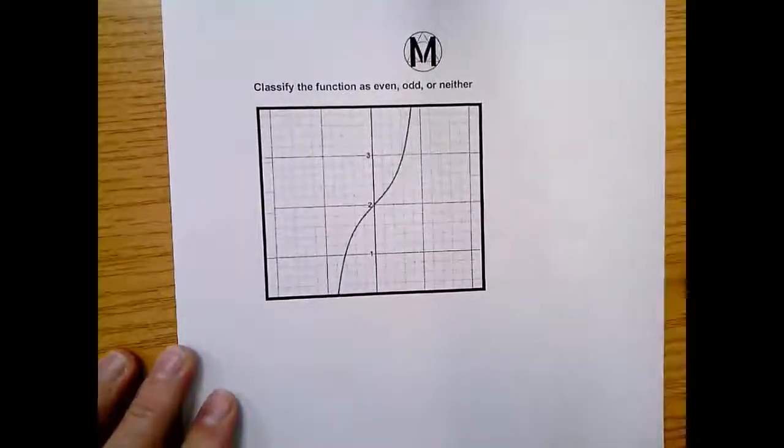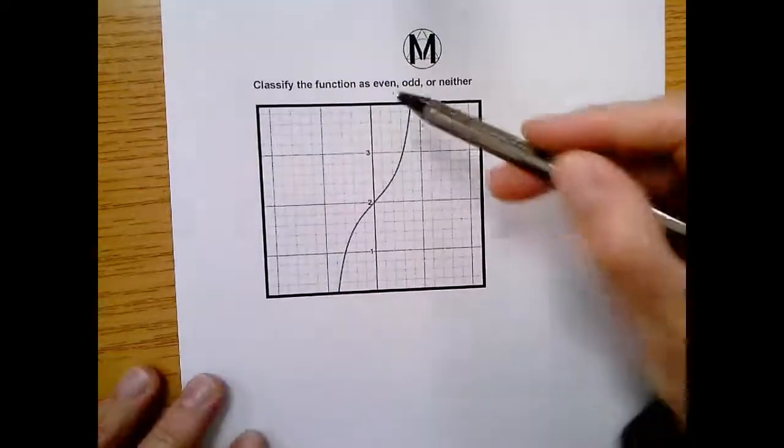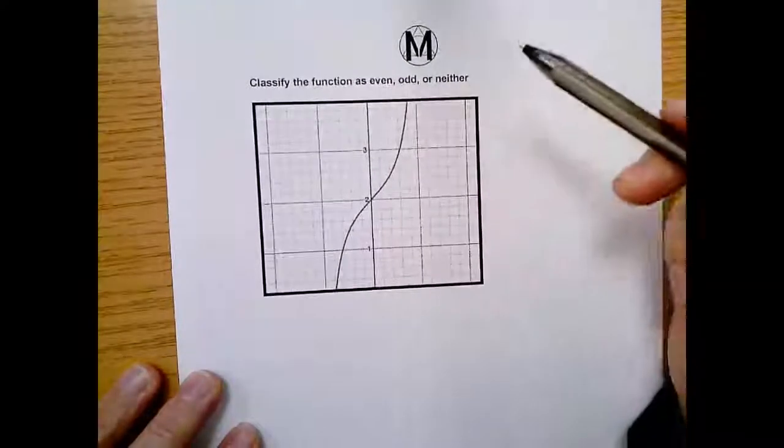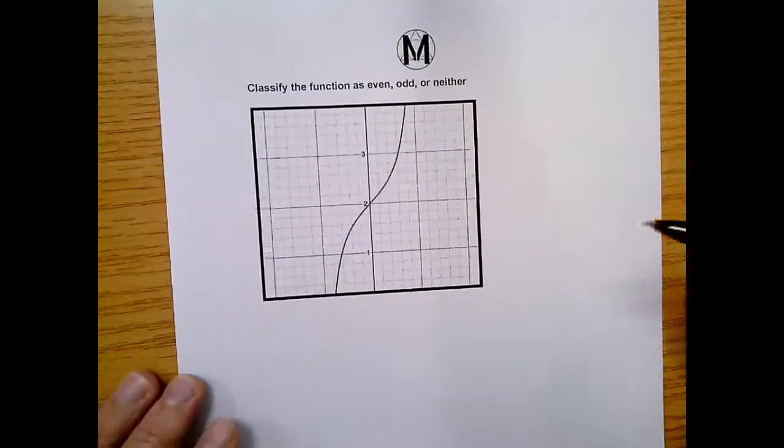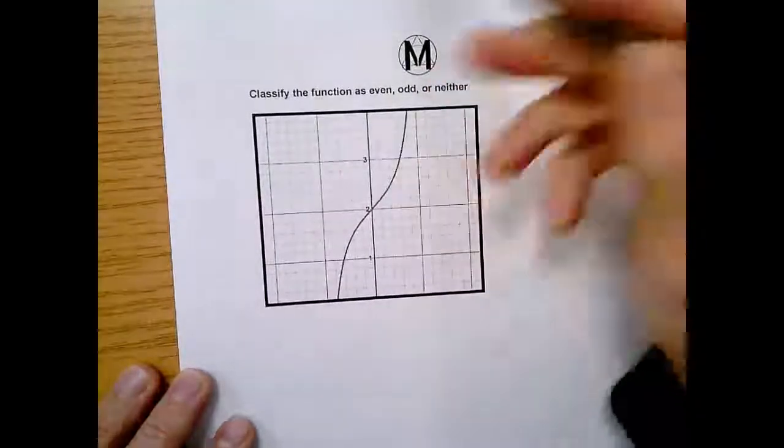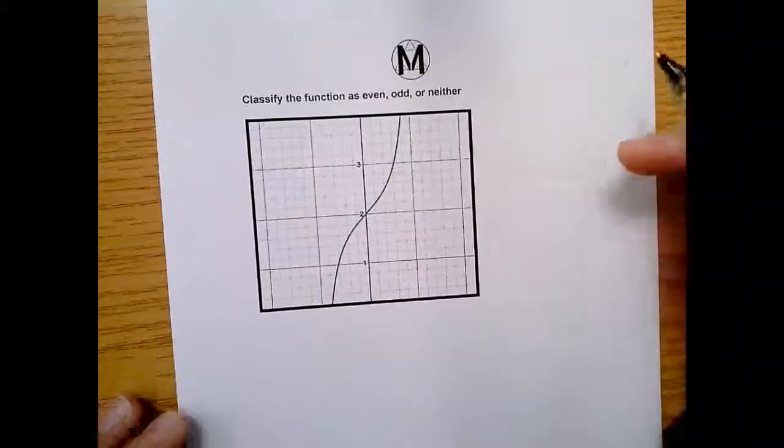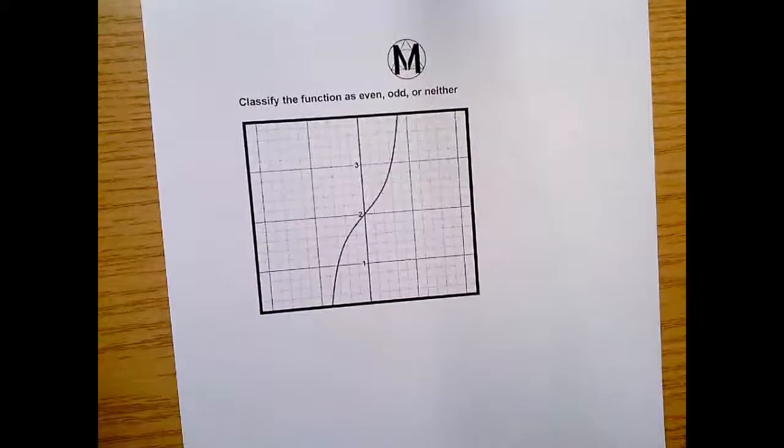They want to do this visually. Okay, so if it were even, that means we would flip it across the y-axis and see if it was right back where we started. So we can do that real fast.